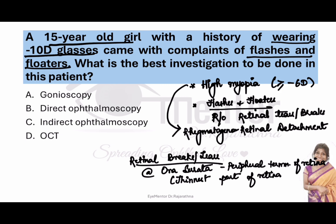Gonioscopy is for the angle. Direct ophthalmoscopy cannot see beyond the equator. OCT may be used for serous retinal detachment, not rhegmatogenous. So the answer is indirect ophthalmoscopy, because only then can I see the peripheral retina.